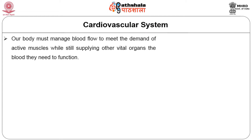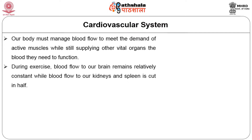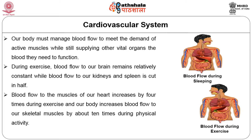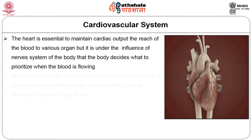Our body must manage blood flow to meet the demands of active muscles while still supplying other vital organs. During exercise, blood flow to the brain remains relatively constant, but blood flow to organs like the kidneys and spleen may decrease. Blood flow to the muscles of the heart increases by four times during exercise, and blood flow to skeletal muscles increases by about ten times during physical activity.